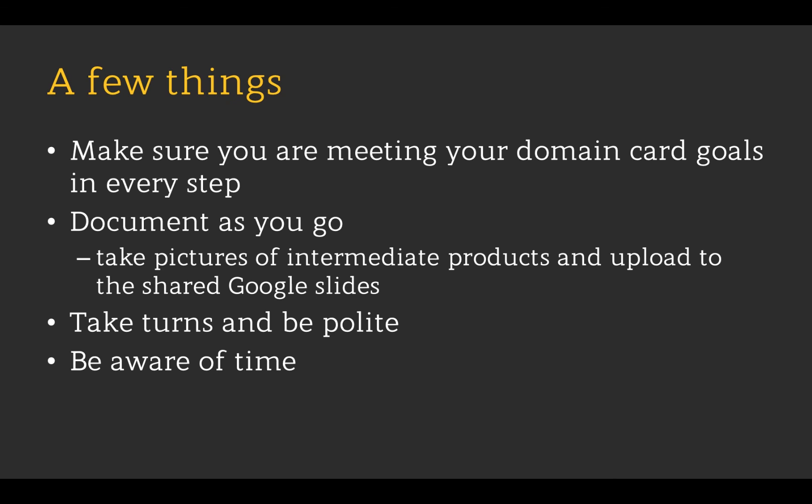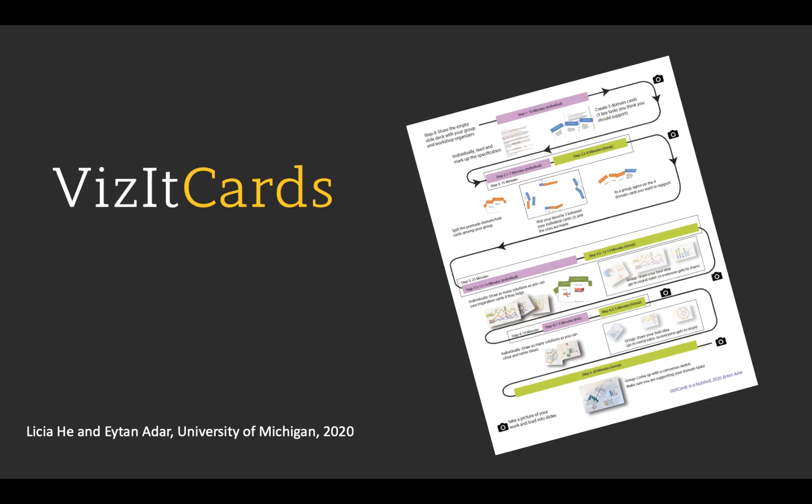Just a few things to summarize: make sure you're meeting your domain card goals — you've decided on those objectives, so make sure you're meeting them. Document as you go; take pictures of all the intermediate products, all the sketches, the cards you've picked out, and so on. Take turns and be polite — very important. And be aware of the time; we'll often give you warnings, but you should be aware of how much time you have for different tasks. This was a very brief introduction to VisitCard. You will be given a cheat sheet, so hopefully this will become easier and simpler the more you do this exercise.